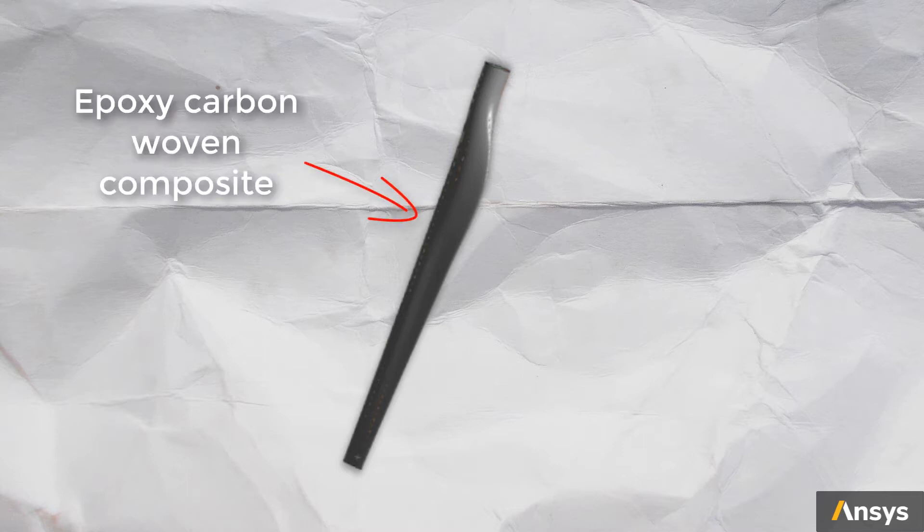In this example, let's study the buckling loads of one such design of a wind turbine blade. We will start with a hollow tube and see if there is a need to improve its design. The blade is assumed to be made of an epoxy carbon woven composite, so it is defined as an orthotropic elastic material.